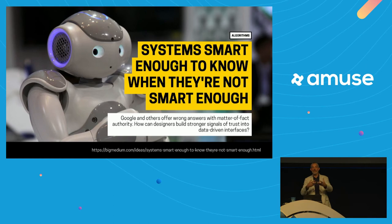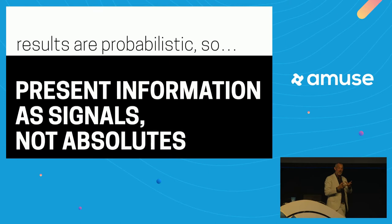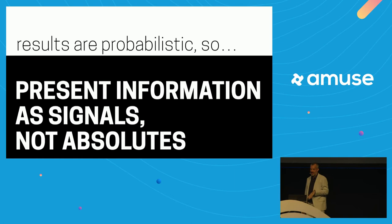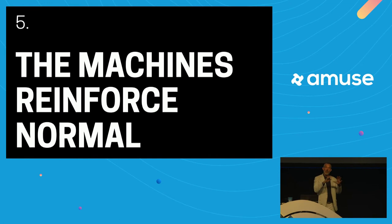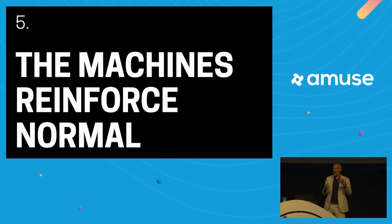Maybe the most important thing today: we cannot treat the results of these things as flat black-and-white answers. We have to think about treating things as signals. And these signals are always relative to a baseline of normal — the whole point of machine learning is to understand what is normal, then predict the next normal thing, or find discrepancies from normal for fraud, crime, or disease.